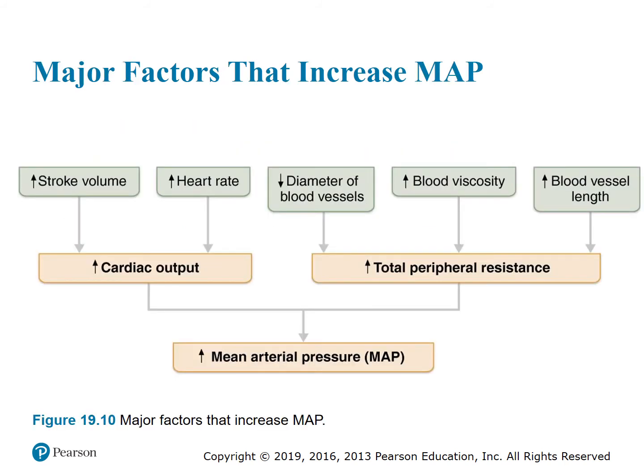Figure 19.10 summarizes major factors that increase mean arterial pressure. Increasing stroke volume and heart rate increases cardiac output, which increases MAP. Decreasing blood vessel diameter, increasing blood viscosity, and increasing blood vessel length all increase total peripheral resistance, which increases MAP.